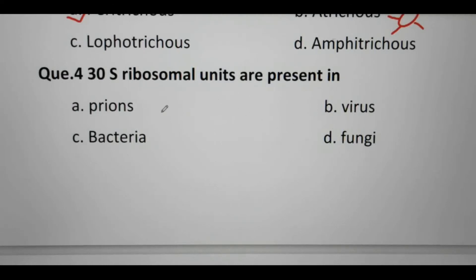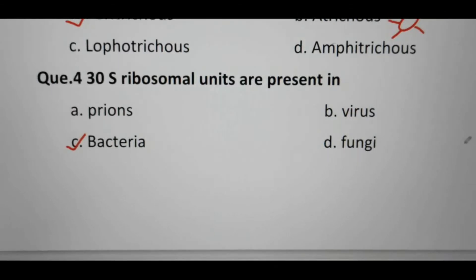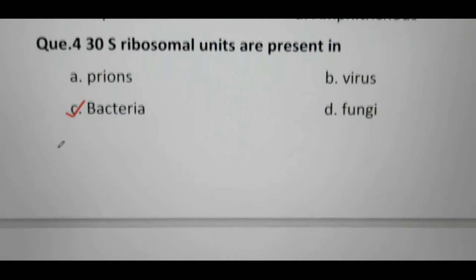The 30S ribosomal unit is the small subunit of the 70S ribosome, found in bacteria. Fungi are eukaryotes, so they have 80S ribosomes, which are divided into 60S and 40S subunits. Bacteria have 50S and 30S subunits. So bacteria is the correct answer.